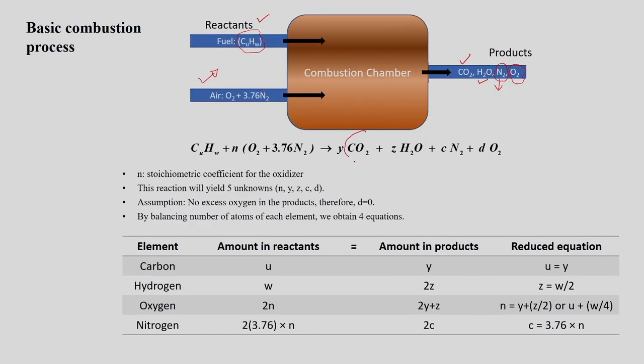In practice, nitrogen will also lead to a certain amount of products in the form of NOx like N2O and NO2. Under ideal conditions, the combustion process mainly produces completely combusted products in the form of CO2 and H2O, considered as stable oxidized products of the fuel.